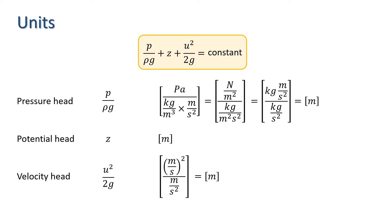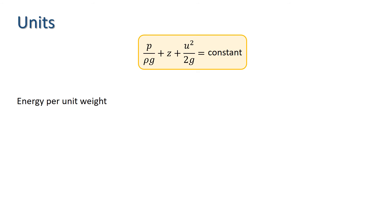It is worth noting that this can be interpreted as energy per unit weight. Let's have a quick look at that. The units of energy per unit weight are joules per newton. Now one joule is a kg meter squared per second squared, and a newton is kg meters per second squared. So again, this reduces to meters, as we might expect.